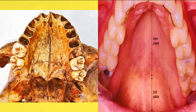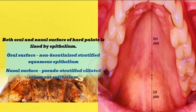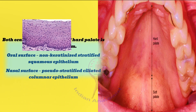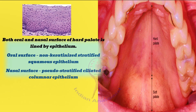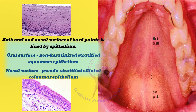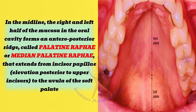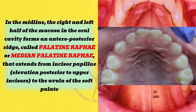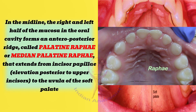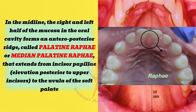Both the oral and nasal surfaces of the hard palate are lined by epithelium. The mucosa of the oral surface is lined by non-keratinized stratified squamous epithelium, while the nasal surface is lined by pseudostratified ciliated columnar epithelium. In the midline, the right and left halves of the oral mucosa form an anteroposterior ridge called the palatine raphe, or median palatine raphe, which extends from the incisor papillae — an elevation posterior to the upper incisors — to the uvula of the soft palate.